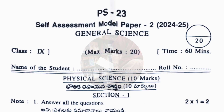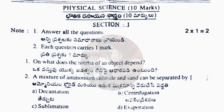Bismillahirrahmanirrahim. Welcome back to my channel, Still a Learner. This video is all about the question paper plus answer key for ninth class general science and biological science — the full question paper of this year, which is the self-assessment model question paper, meaning the real question paper.